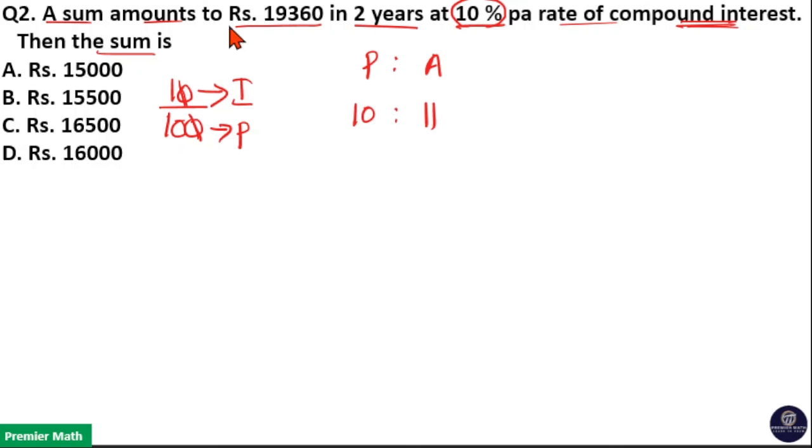This sum amounts in 2 years. So this is for 2 years. That means take the square of 10 unit and 11 unit. So, this 10 square is 100 and 11 square is 121.